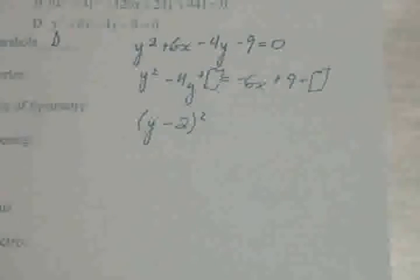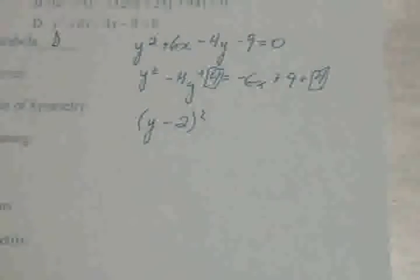Half of negative 4 is negative 2, giving us y minus 2 squared. That negative 2 squared is 4, which we'll put in both boxes.